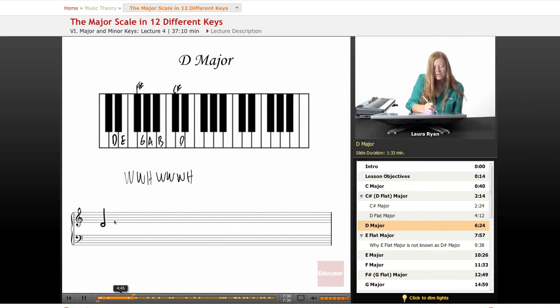Let's continue writing it out: D, E, F sharp, G, A, B, C sharp, and D. There it is. You can write it going up and down, but for time's sake we'll just write the ascending scale going up.